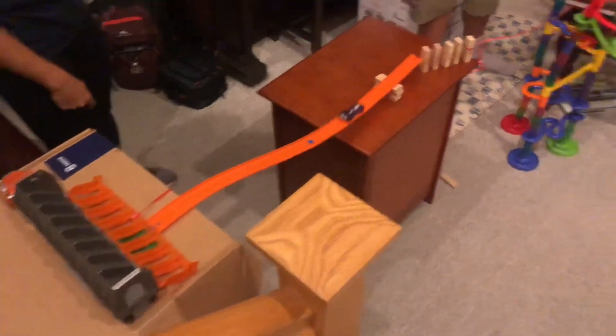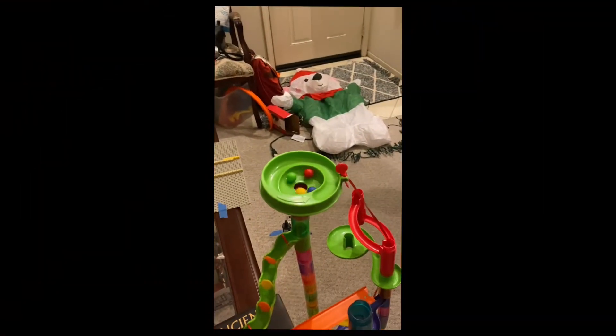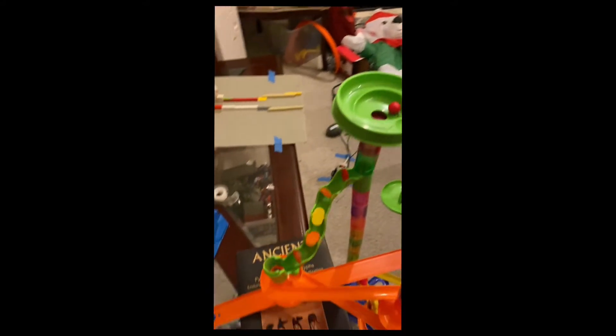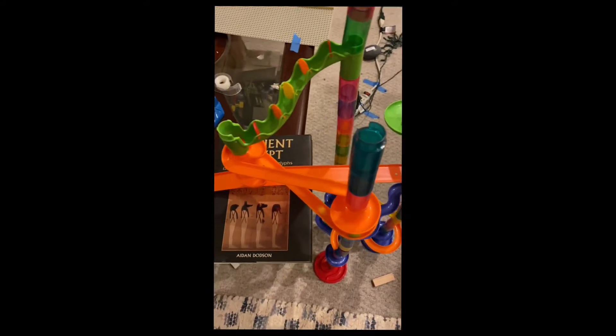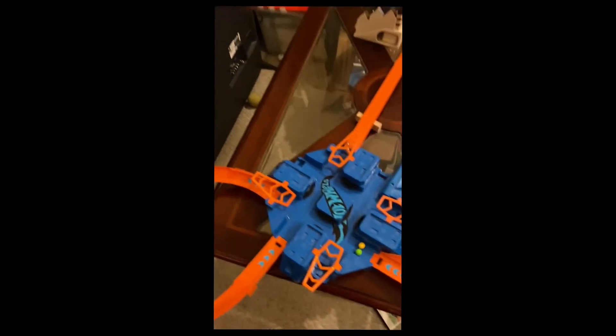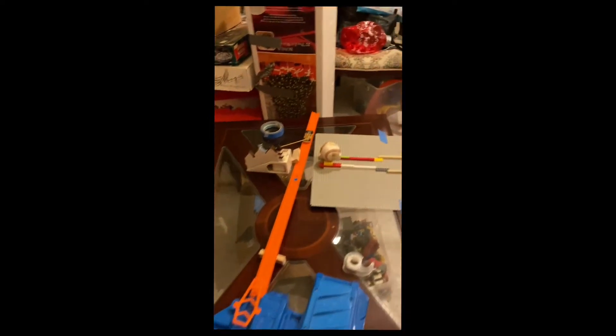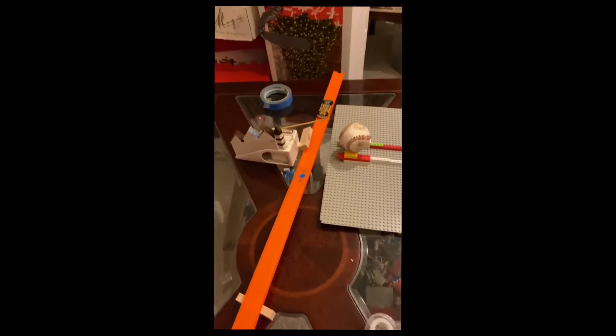Our first process of the Rube Goldberg machine is the car launching and hitting the dominoes. After they have fallen, it triggers the marble track to start. From there it hits a car and launches it around in the loop and hits the Jenga block holding the music box from going.